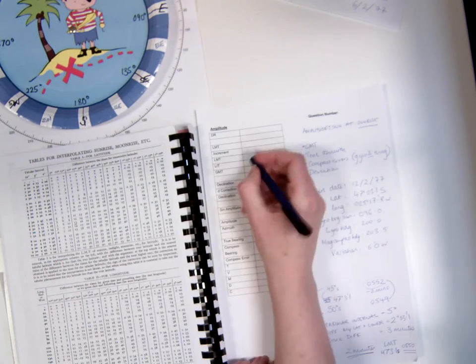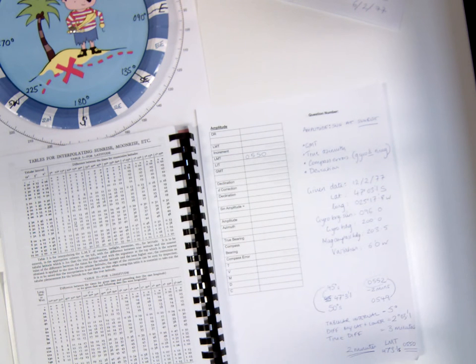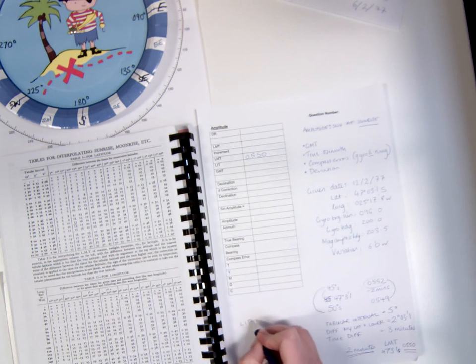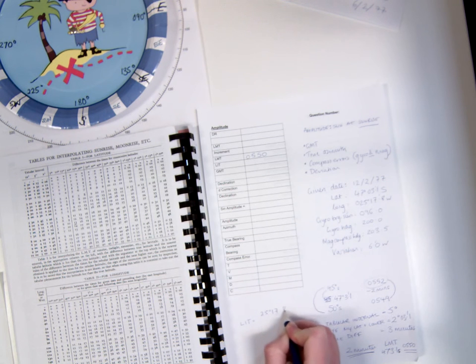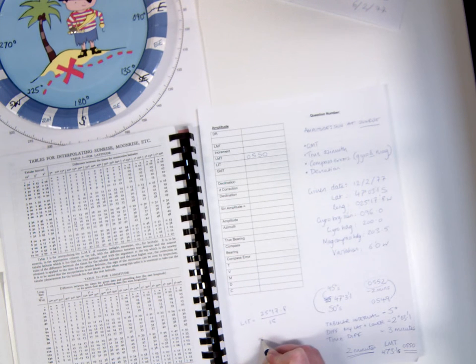This can now form the basis of my calculation of GMT. In order to find GMT from an LMT, we have to find the longitude in time, and we do this by dividing our longitude by 15. So we take 25 degrees 17.8 minutes divided by 15, and the result of that will give us an hour and 41 minutes.